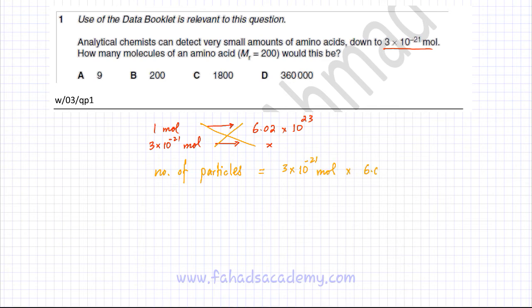If we solve this on the calculator, the answer that we are going to get is approximately 1800. So option C is the correct option. 3 × 10^-21 moles would be equal to 1800 particles of that amino acid.